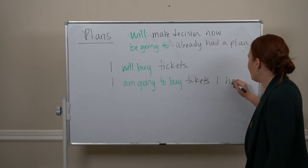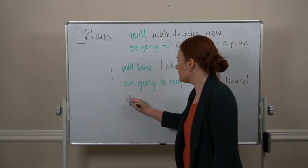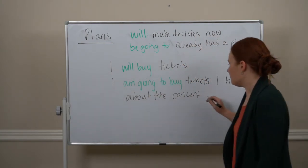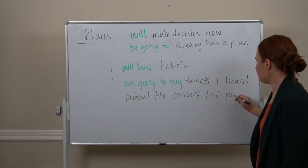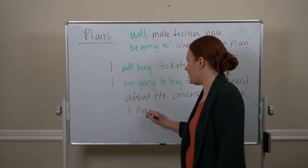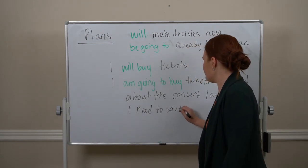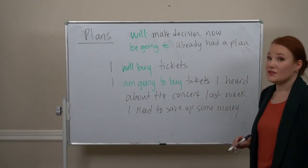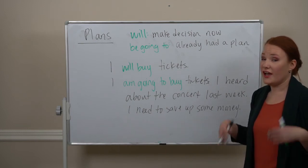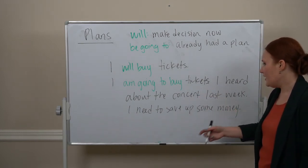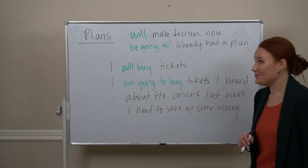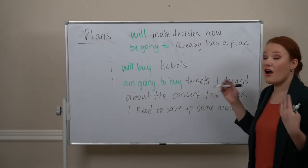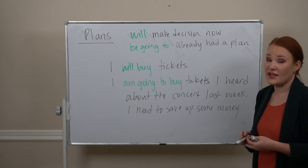We use 'be going to' when we already had a plan that existed before the conversation. Maybe I heard about the concert last week and I need to save up some money — I already knew about the concert and already had a plan. So: 'I am going to buy tickets.' With 'will' we decide right now; with 'be going to' we already have that plan when we talk about it.